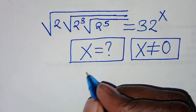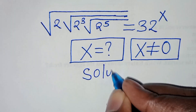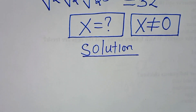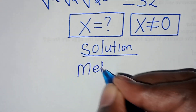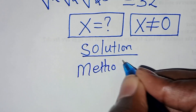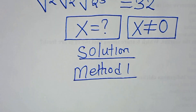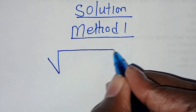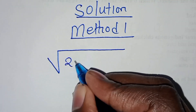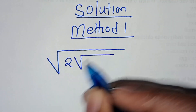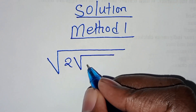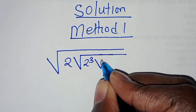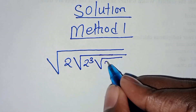We are going to solve this by applying two methods. Let's start with Method 1. So here we have the square root of 2 times square root of square root of 2 to the power of 3, and then we have 2 to the power of 5.